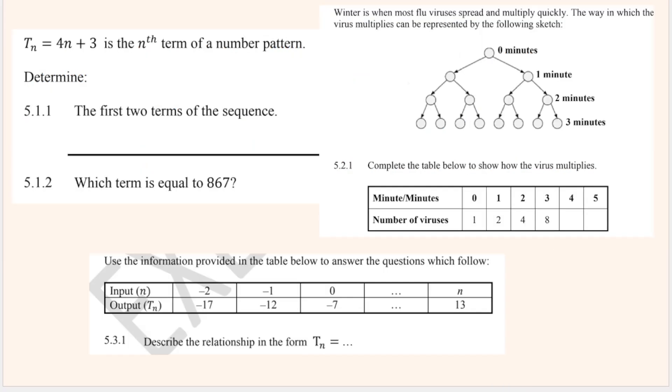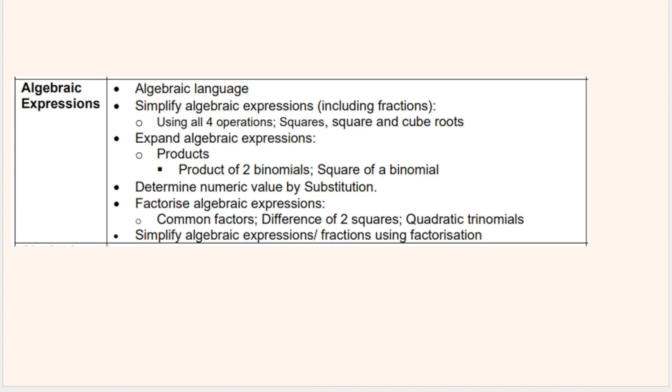Here are examples of what your questions could look like for this section. As you can see, we've got first two terms of the sequence. They give you the tn. They want you to complete the table. They want you to find the rule, the tn, things like that.